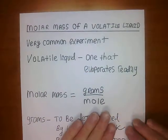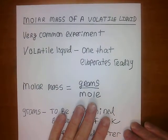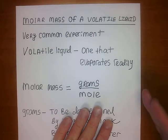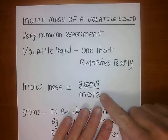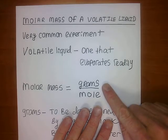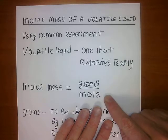What is molar mass? The molar mass of a substance is the mass in grams required to give you one mole of molecules. Basically, your unit here is going to be grams per mole — grams over moles.